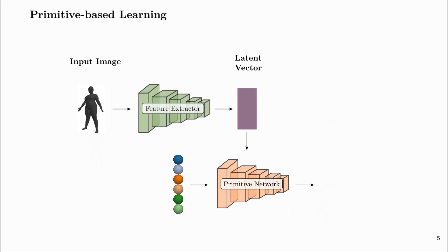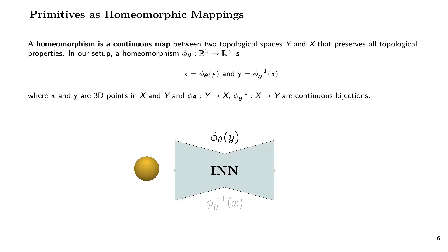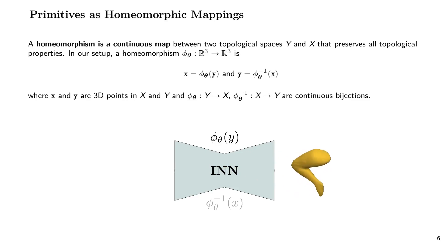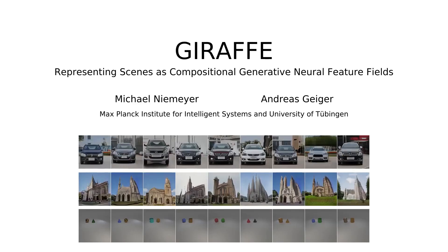We define each primitive as the deformation of a sphere that is conditioned on the input via a predicted latent vector. This formulation allows each primitive to be an arbitrarily complex genus-zero shape. We define this deformation as a homeomorphic mapping implemented with an invertible neural network. This allows us to get an explicit mesh representation as well as an implicit occupancy representation for each primitive using the forward and inverse mapping of the invertible neural network.